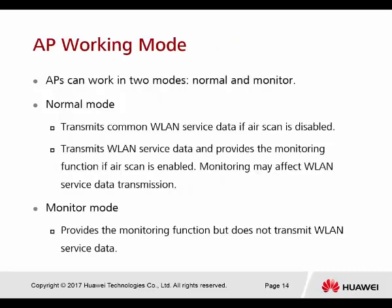An AP can work in two modes: normal and monitor. In normal mode, it transmits common WLAN services. If air scan is disabled, it purely provides normal service access for clients. If air scan is enabled, it transmits WLAN service data and provides monitoring function, though monitoring may affect WLAN service data transmission. In monitor mode, the AP provides the monitoring function only and does not transmit WLAN service data — it is purely for scanning purposes.